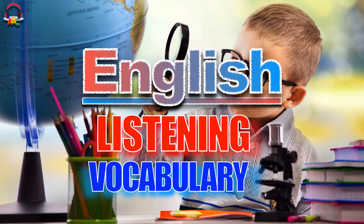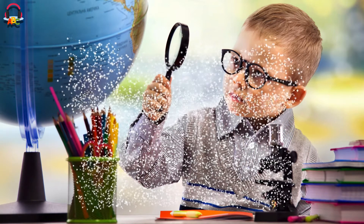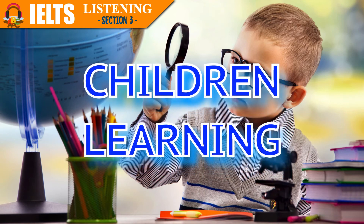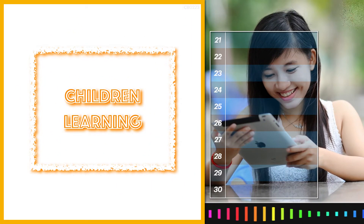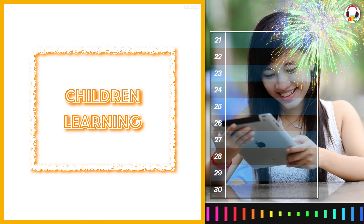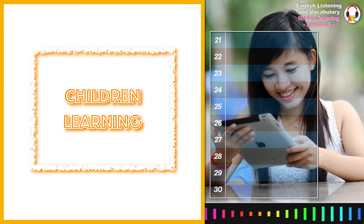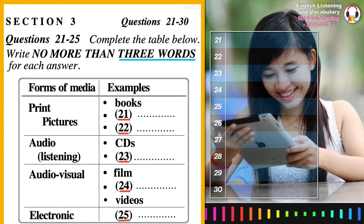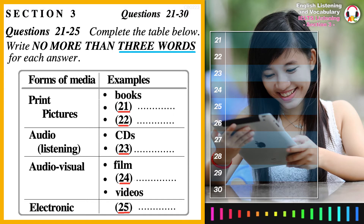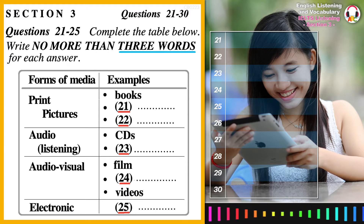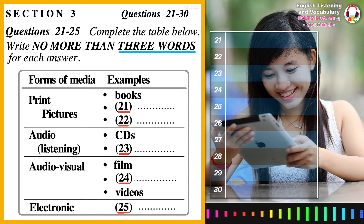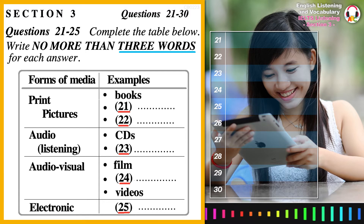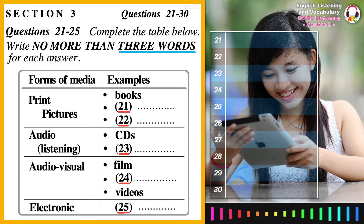Welcome to English Listening and Vocabulary, Section 3. You will hear a conversation between two students, Lynn and Robin, who are discussing an assignment. First, you have some time to look at questions 21 to 30. Now listen carefully to the conversation and answer questions 21 to 30.